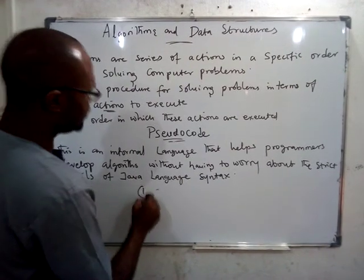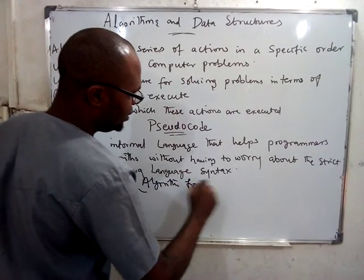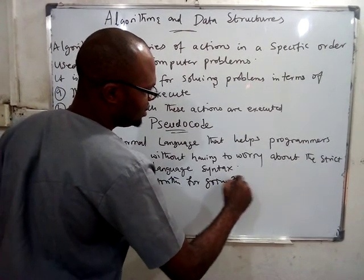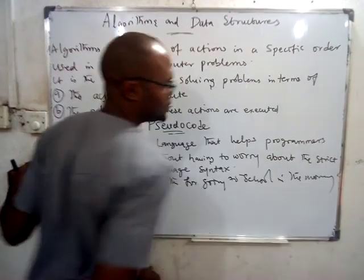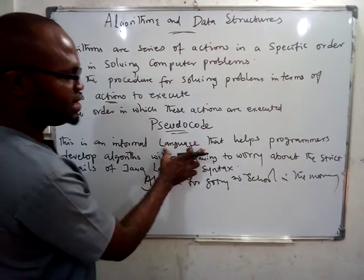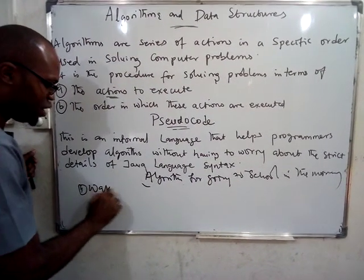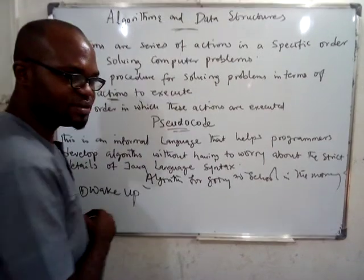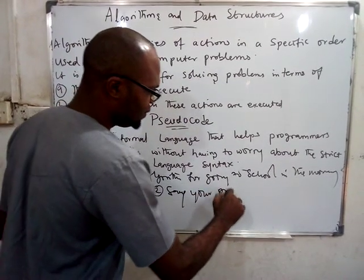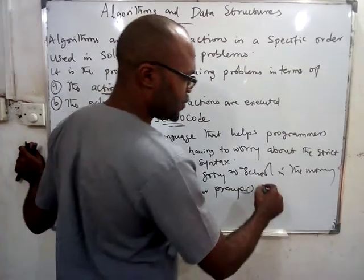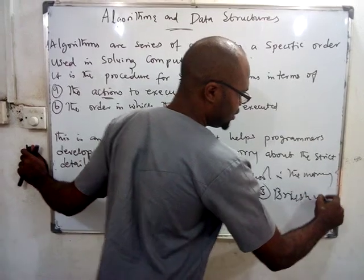If I want you to write an algorithm for somebody going to school and you start saying System.out.println, some people will not understand it. So you write it using a simple language that everybody can understand — simple English. To write an algorithm for going to school in the morning, we use a simple informal language known as pseudocode. So what is the first thing you do to go to school in the morning? Number one: wake up. Number two: say your prayers. Number three: brush your teeth.